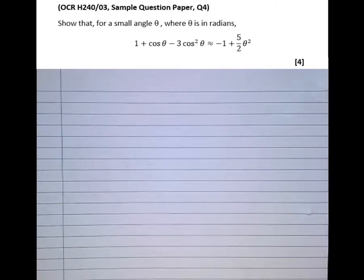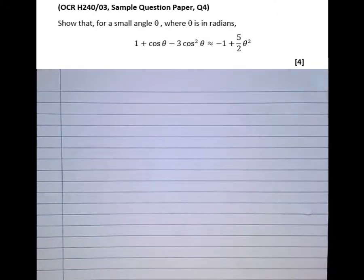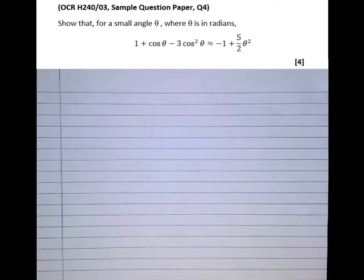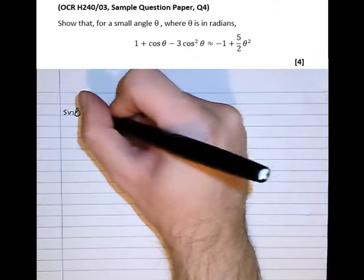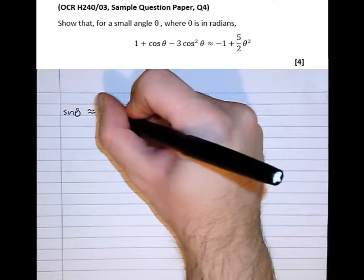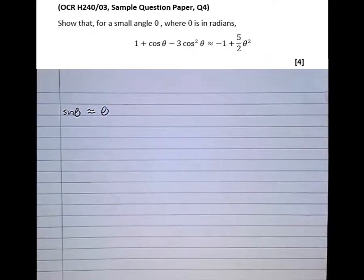When we're dealing with angles in radians, especially small angles, there's a few approximations we can make to make the calculations easier. So when dealing with sine theta, when the angle's small, it just so happens that this is approximately equal to theta itself.